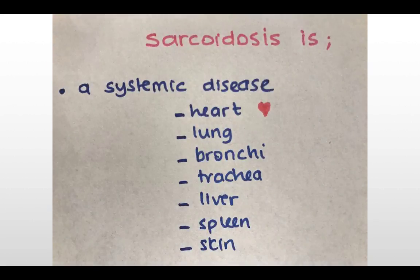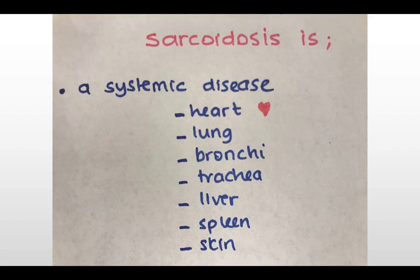So what are the most common organs involved in patients with this disease? The heart, which is our main concern. The other organs are the lung, the bronchi, the trachea, the liver, the spleen, and the skin.